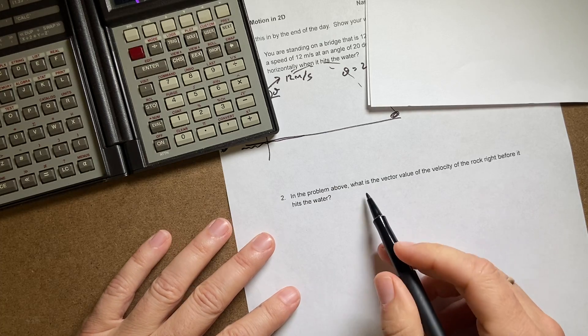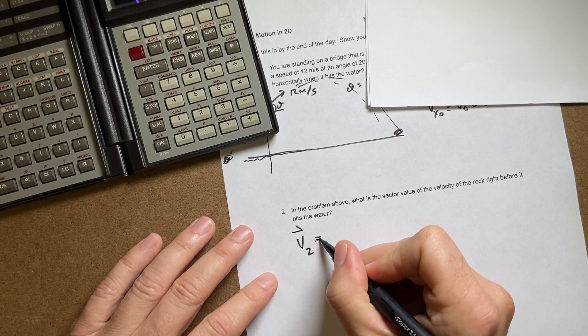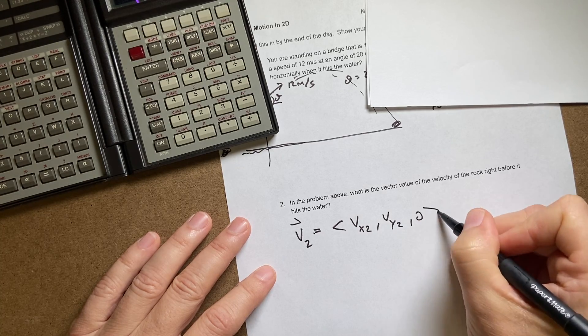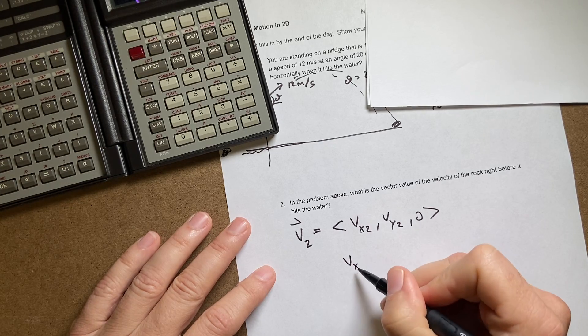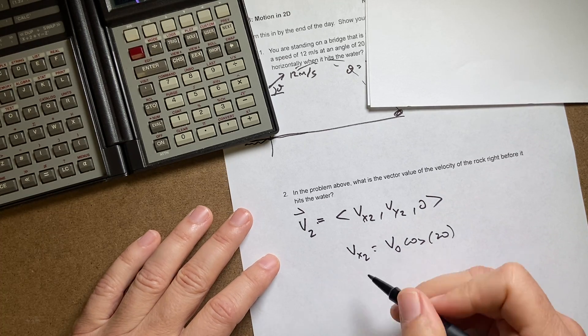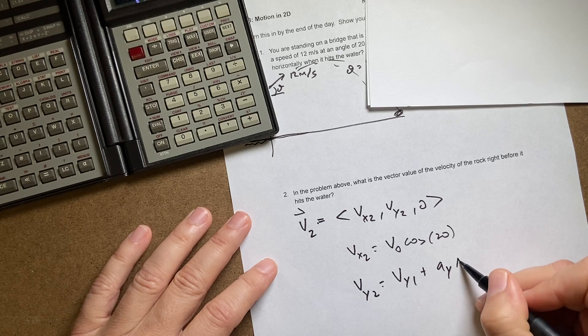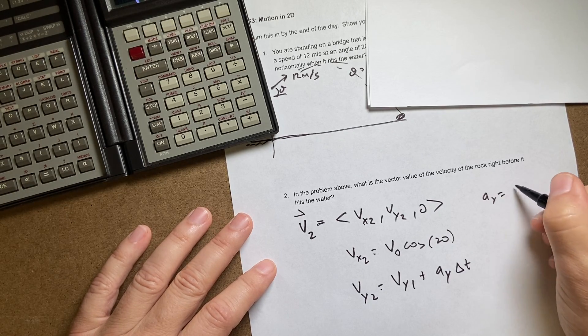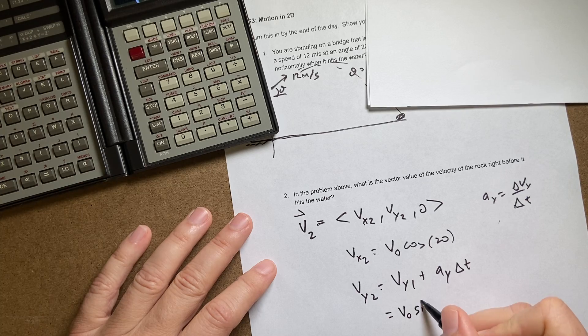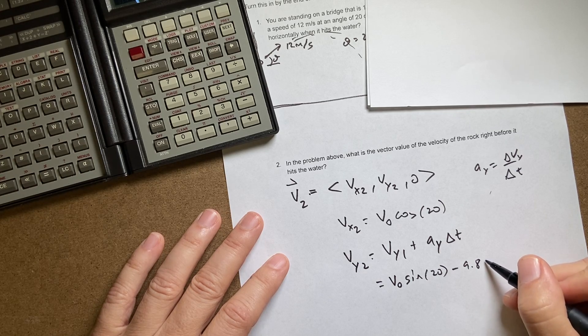Now part 2 says what is the vector value of the velocity of the rock right before it hits the ground. So I need to say V2 vector is going to be equal to the vector Vx2, Vy2. I already have Vx2. Vx2 is going to be V0 cosine of 20. It did not change. The x velocity did not change. Now for the y velocity I can use this. Vy2 is going to be Vy1 plus Ay times delta t. That's the definition of acceleration. Ay is delta Vy over delta t. So if I solve that for V2 I get this.